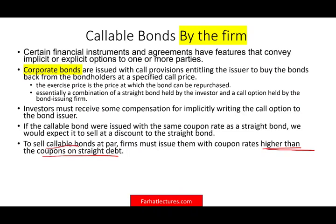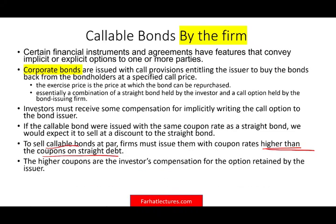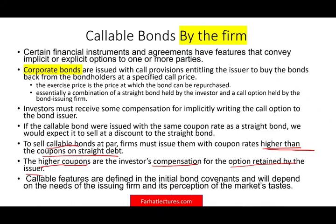So callable bonds must pay higher interest, or they will be sold at a discount. Firms must issue them with a coupon rate higher than those of straight debt. As a lender and buyer of the bond, you're giving the firm an extra feature, and they have to pay for that by compensating you with higher interest or coupon payments. The higher coupon is the investor's compensation for the option retained by the firm. The callable features are defined in the initial bond covenant and depend on the needs of the issuing firm and its perception of the market.